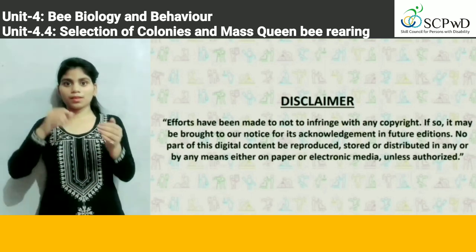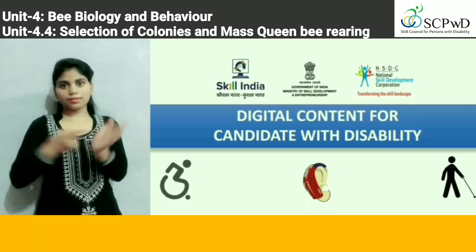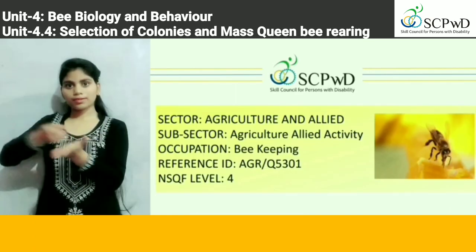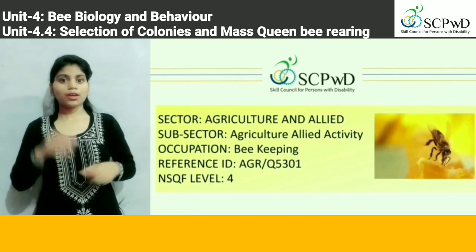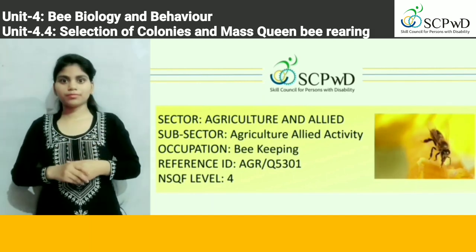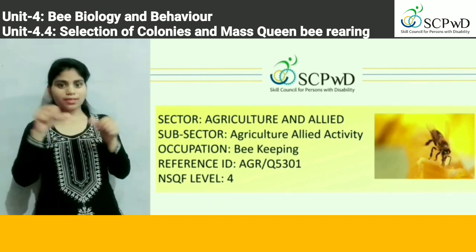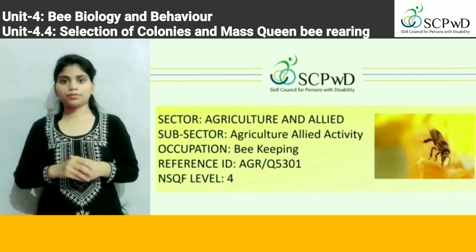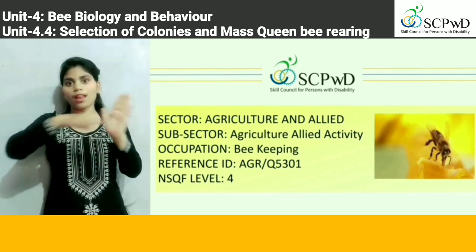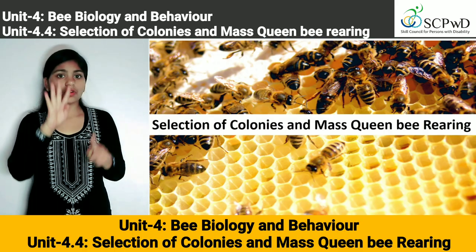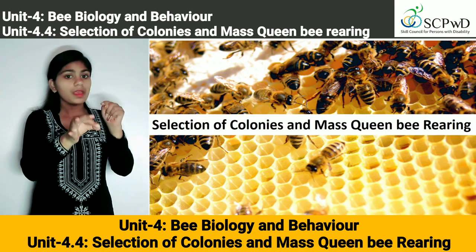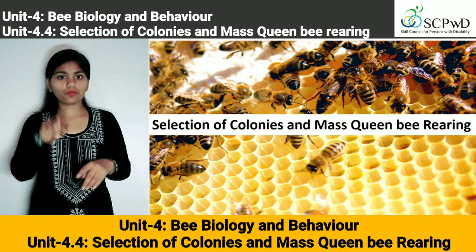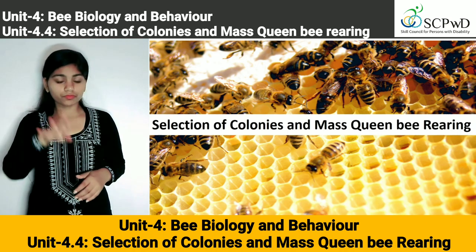Digital Content for Candidate with Disability — Agriculture and Allied Activity Occupation: Beekeeping. Reference ID: AGR/Q5301, NSQF Level 4. Unit 4: Bee Biology and Behavior. Unit 4.4: Selection of Colonies and Mass Queen Bee Rearing.